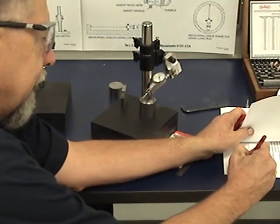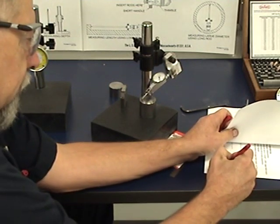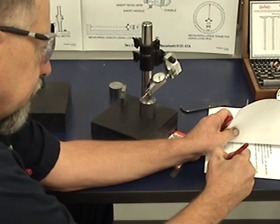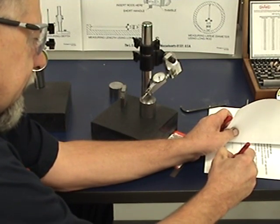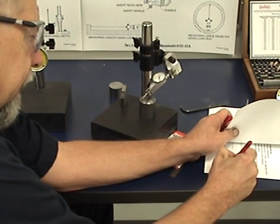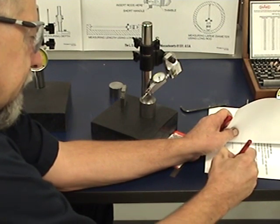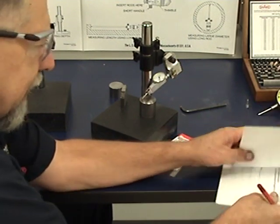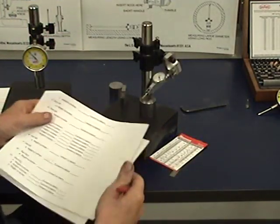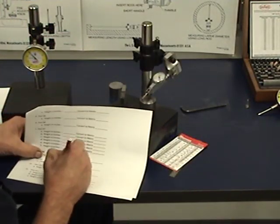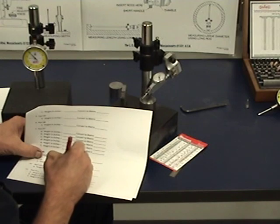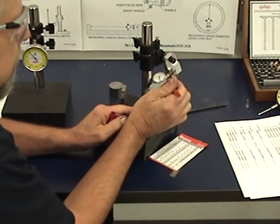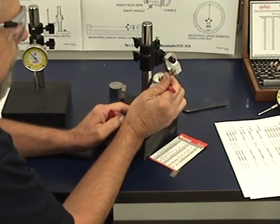So we're going to go 1.531. We're going to add 48 thousandths .048. Add it together and we'd get 1.579. So it is quite a bit of difference than what I have. So I'll scratch that out and put 1.579. So make sure your indicator doesn't bottom out. These indicators don't have a lot of travel. Maybe two rounds and that's it.